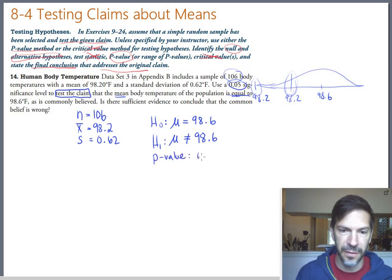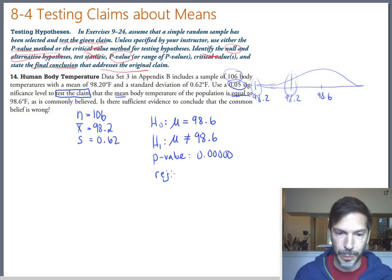The p-value equals 0.00000. That means this 98.6 is actually way off the edge of the curve, probably even further off than what I've drawn. That definitely says it doesn't seem like the null is right, doesn't seem like this whole curve that I drew is right. So we are going to reject the null and say it seems like 98.6 is wrong.